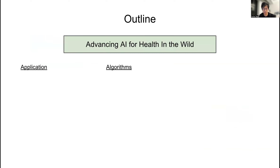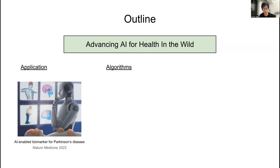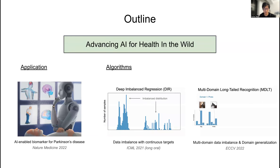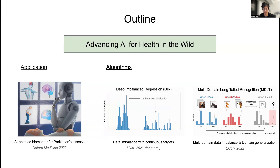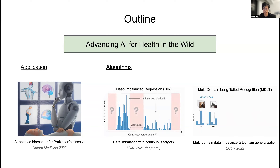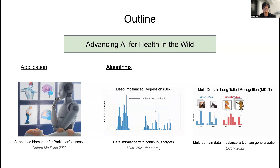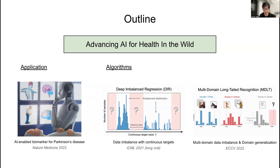The outline of this talk focuses on using AI to advance health applications in the wild. I will cover two main topics: applications and algorithms. The main story centers on a real-world AI model for discovering biomarkers for Parkinson's disease. I will also discuss two key ML challenges: dealing with data imbalance with continuous targets, and modeling data from multiple domains with domain gaps under both data and label shifts.